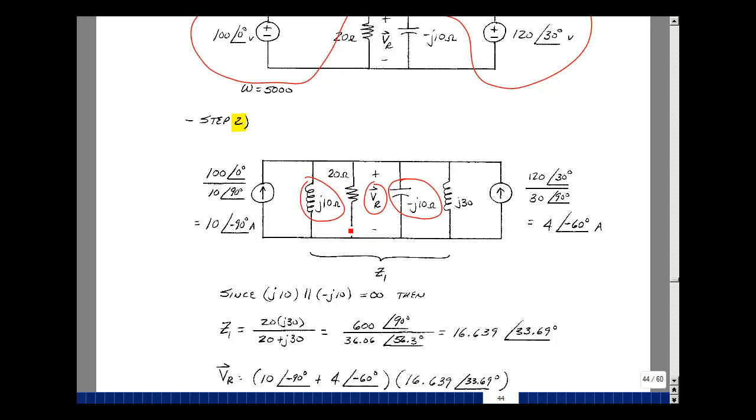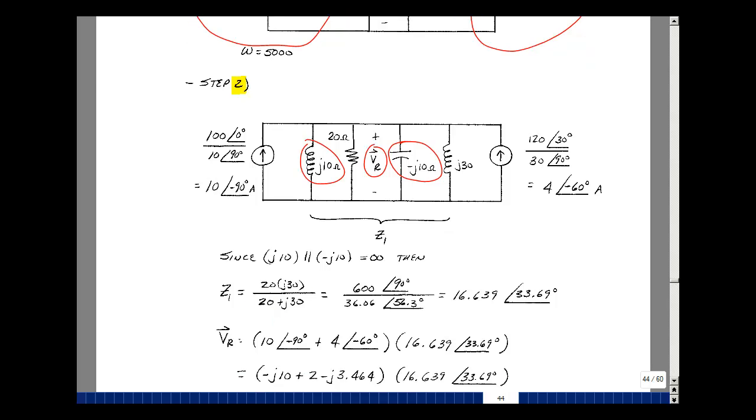What I'm left over with, then, is just a 20 ohm resistor and an inductance of J30 ohms. So the product over the sum would be the equivalent impedance. I'll call that Z1. That's really in parallel with an open circuit because of these two resonating with each other. So the product over the sum, this would be J600, and so that'd be 600 at angle 90.